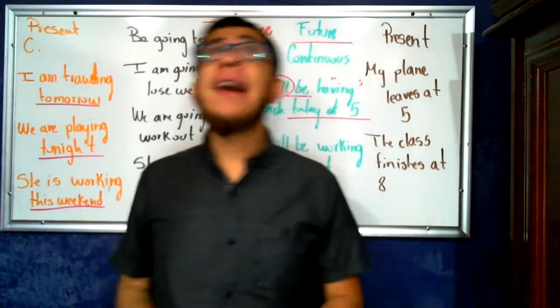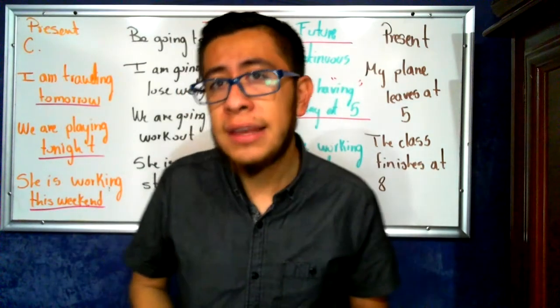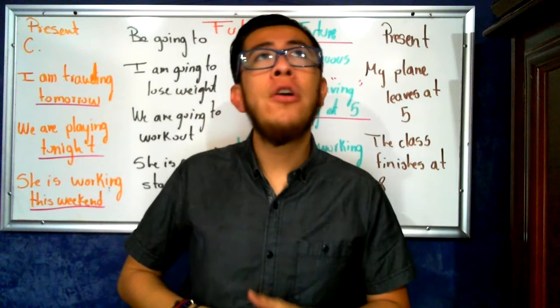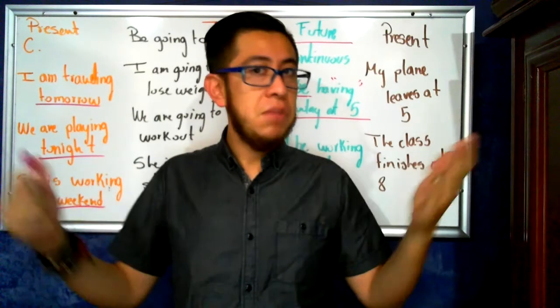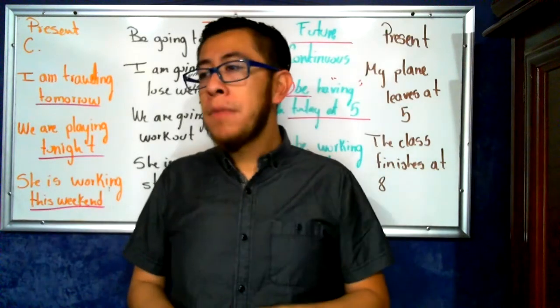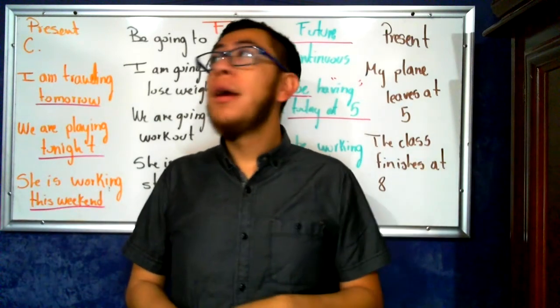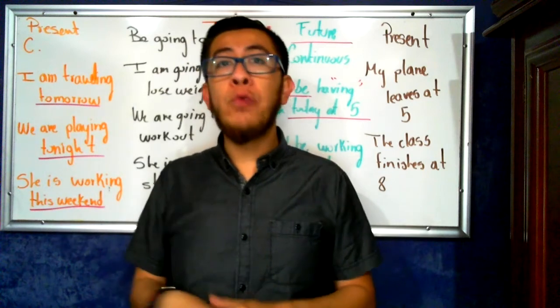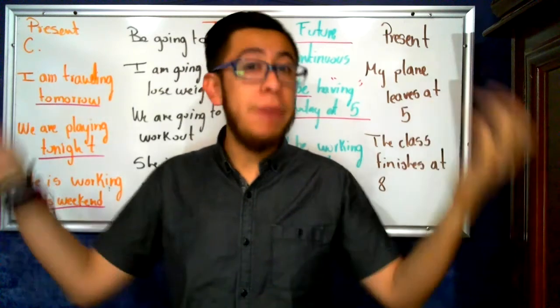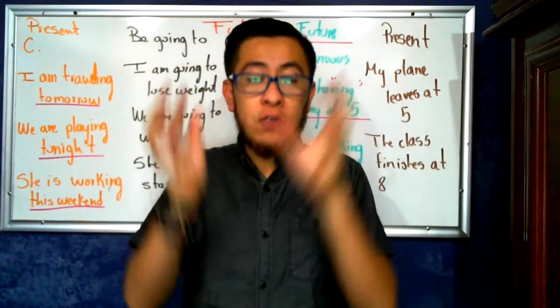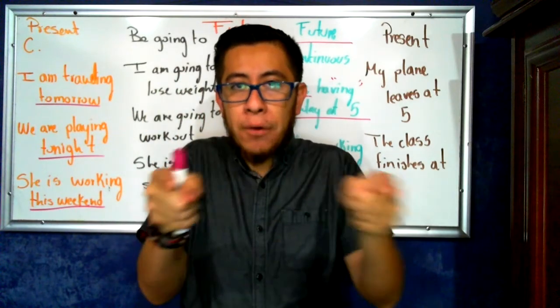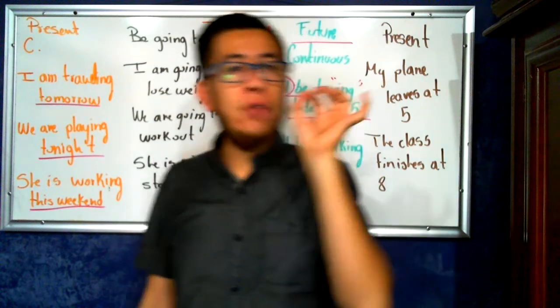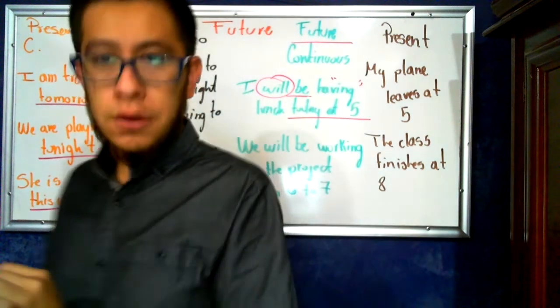Let's think, tomorrow at five o'clock. Tomorrow at five o'clock, I will be giving a class. You will be doing your homework. My best friend will be sleeping. So it's tomorrow at five o'clock, an action that is going to be in progress at that time. That's future continuous.